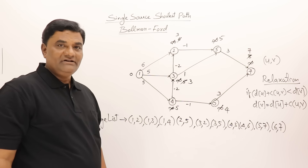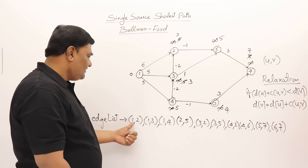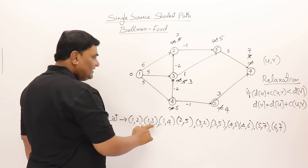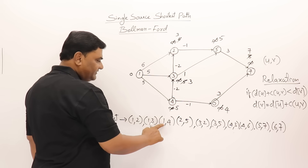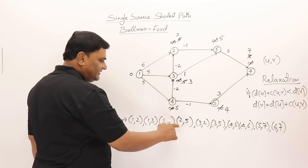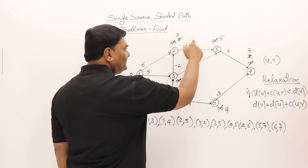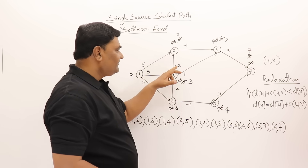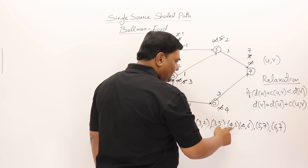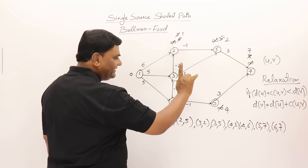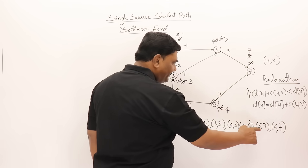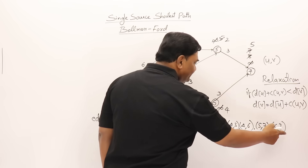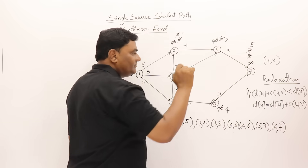Most changes happened in the first pass. Now the second pass. Edge (1,2): zero plus six is six, but vertex 2 is three — no change. Edge (1,3): zero plus five is five, but vertex 3 is three — no change. Edge (1,4): zero plus five is five — no change. Edge (2,5): three minus one is two, so vertex 5 changes to two. Edge (3,2): three minus two is one, so vertex 2 changes to one. Edge (4,3): five minus two is three — no change. Edge (4,6): five minus one is four — no change. Edge (5,7): two plus three is five, which is less than seven, so vertex 7 changes to five. Edge (6,7): four plus three is seven, but vertex 7 is five — no change. Two passes completed.